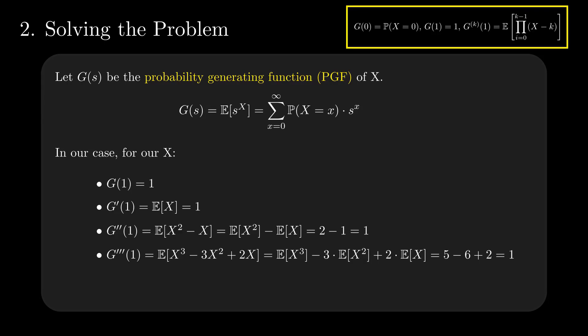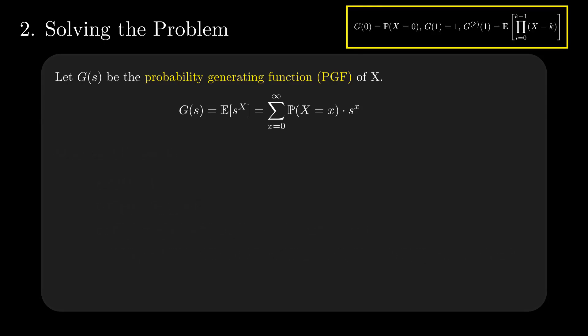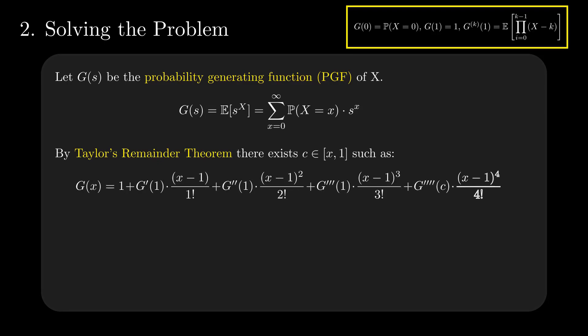We have a function and its higher level derivatives at point 1. What can we do with it to obtain the value of G of 0? How about using Taylor's remainder theorem? It states that we can approximate the value of the function G in x using the derivatives of G at a different point and adding a remainder defined by a value c.